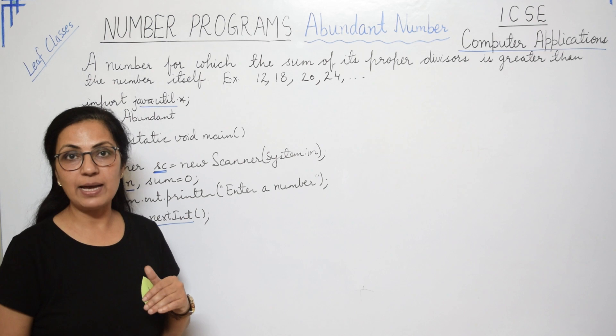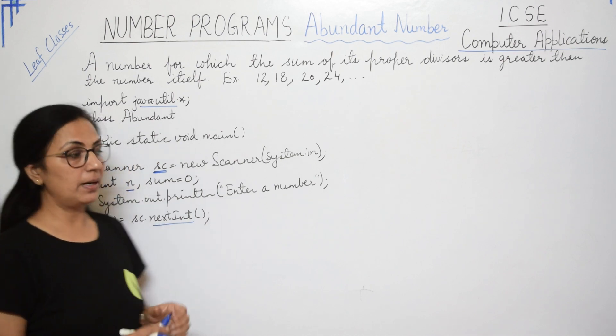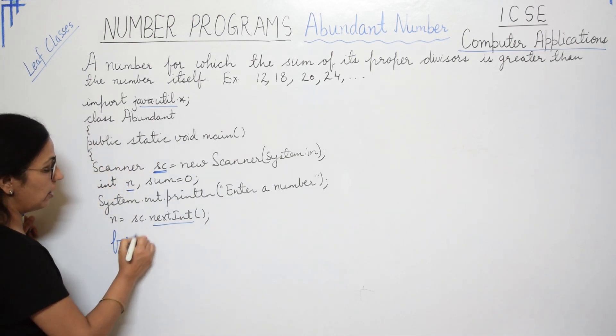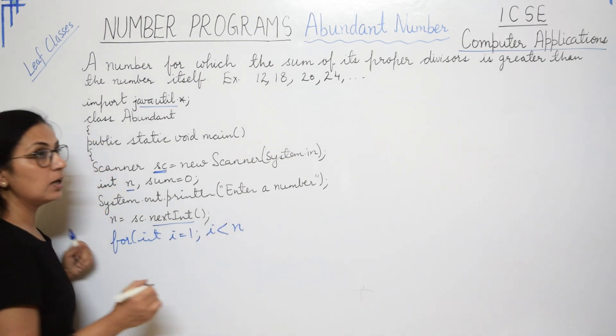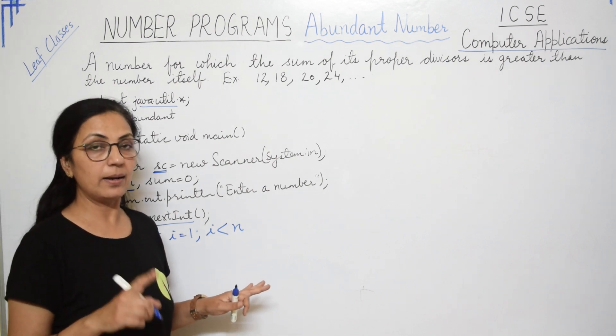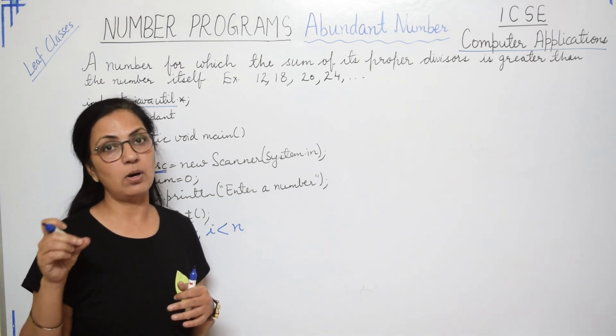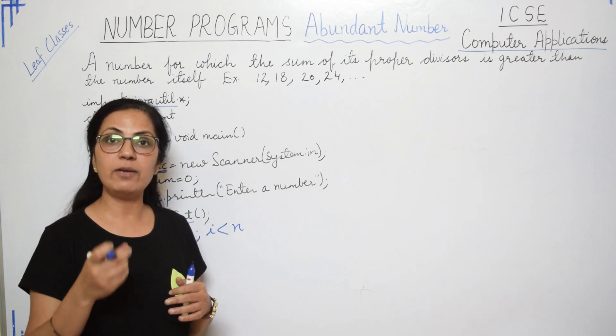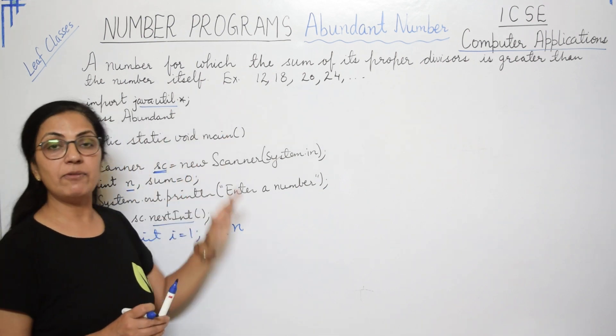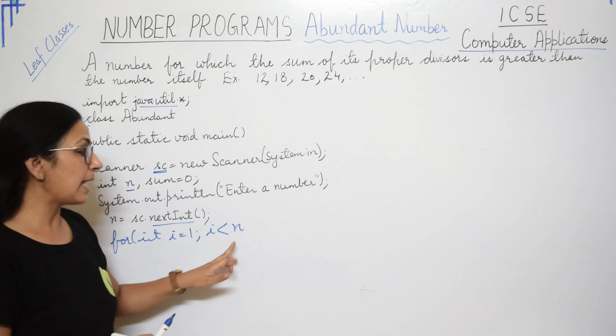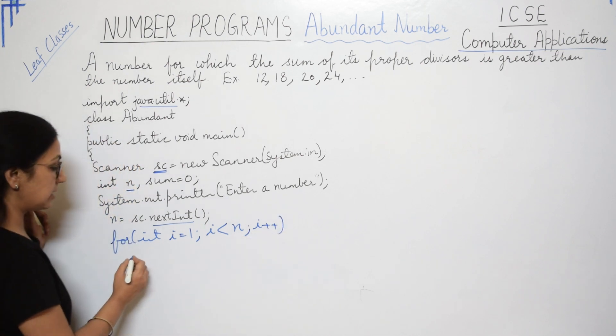Now what we have to do. For finding the proper divisors, we have to take the loop starting from 1 till less than that number. So we will be taking the loop for int i equals to 1, i less than n. Here you will not take less than equals to n. Please make it sure. Many children they forget. They are in habit of writing less than equals to always. So please read the question carefully. Whether that n you have to include or it has to be excluded. So for abundant number, we don't have to include that number. So it has to be excluded. So it will go till less than n only. And every time it will be incremented by 1.